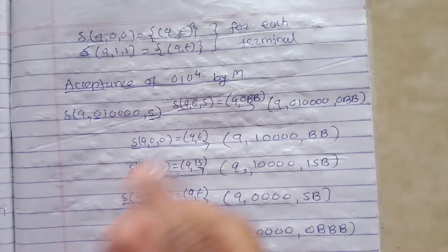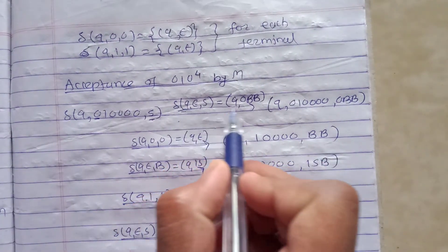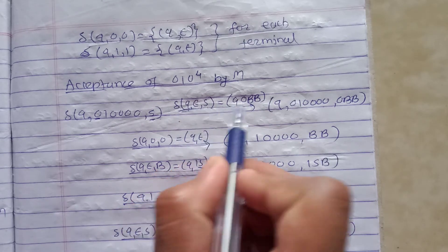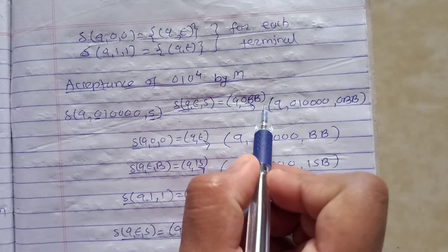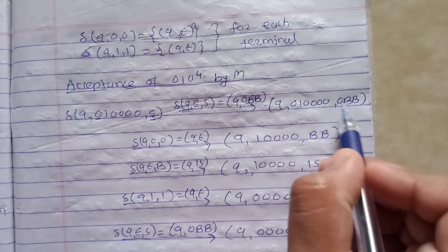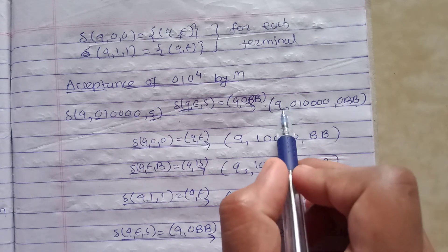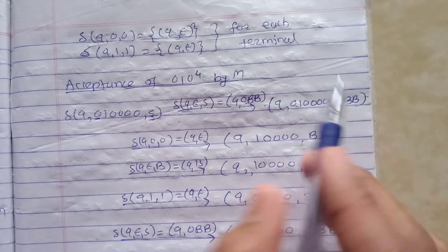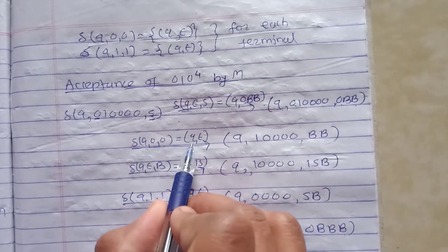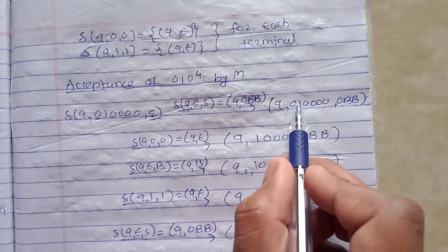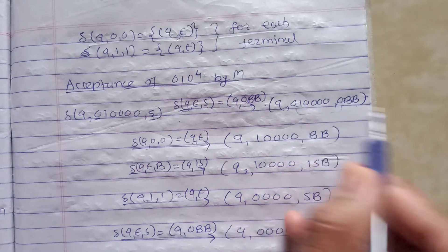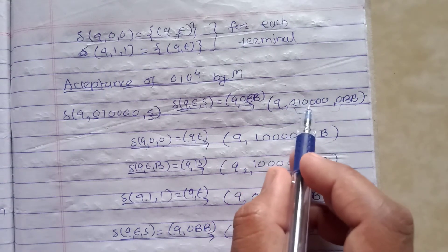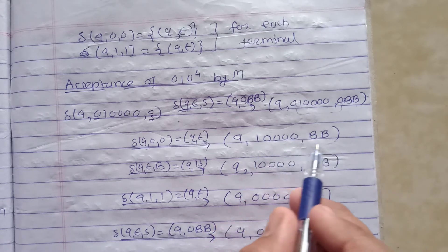(q, 0 1⁴ 0, S) ⊢ using the production S produces 0BB, so δ(q, ε, S) equals (q, 0BB). Through this transition we get (q, 0 1⁴ 0, 0BB). Now δ(q, 0, 0) means (q, ε) - pop will occur. So the input becomes (q, 1⁴ 0, BB).